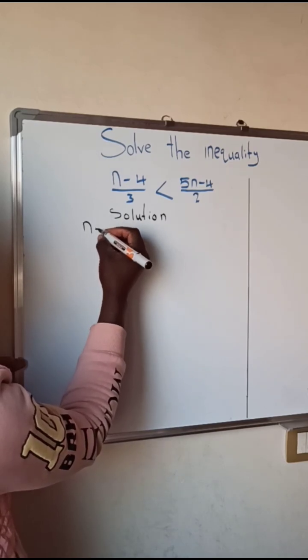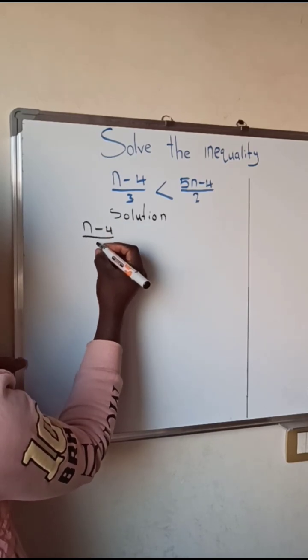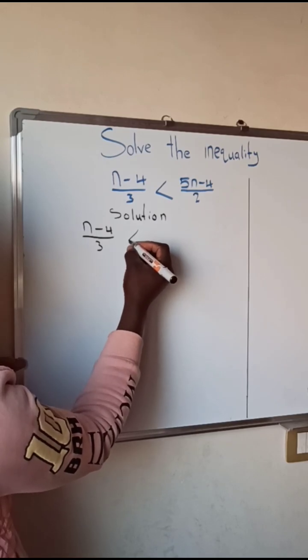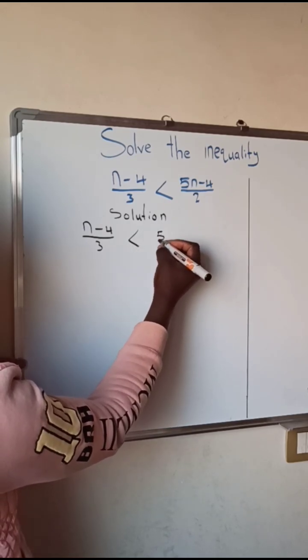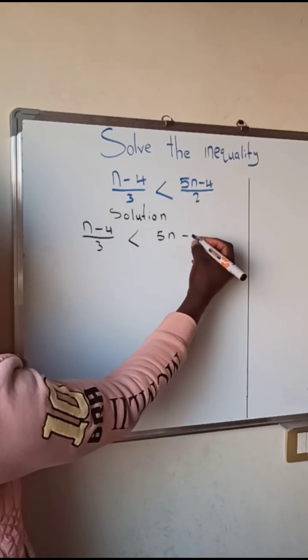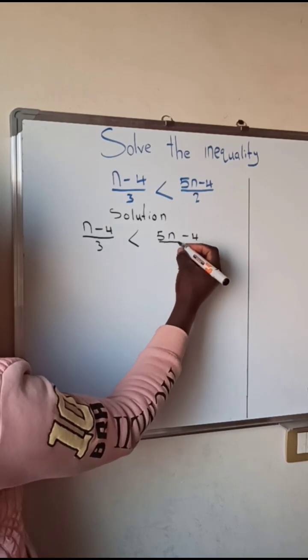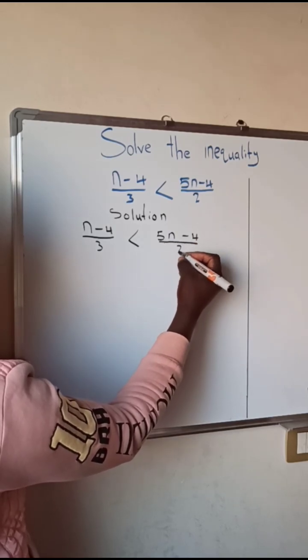So we have here n minus 4 over 3 which is less than 5n minus 4 over 2.